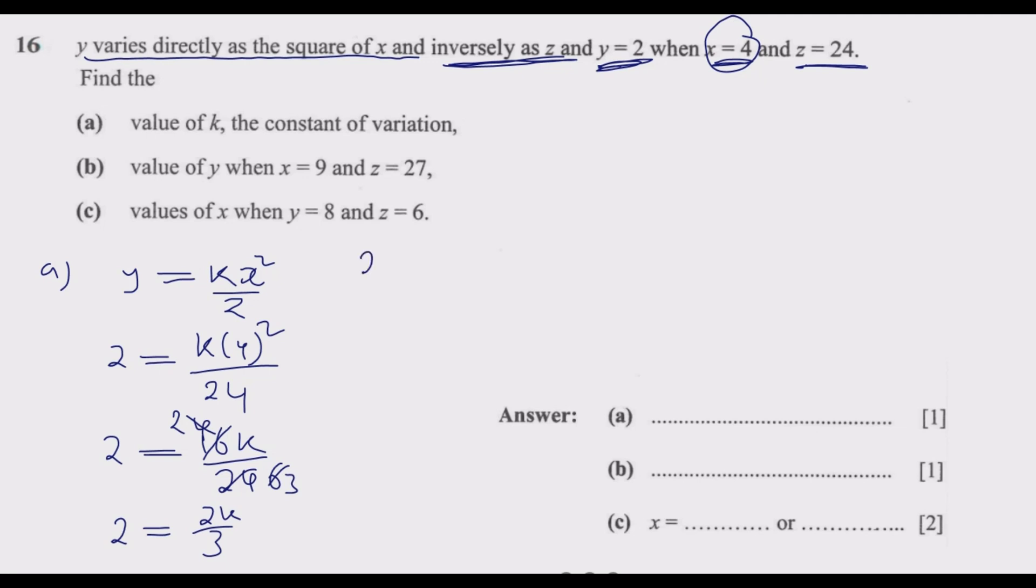We divide by 2 on both sides. So basically, we know that K equals 3. So the constant of variation is equal to 3. That's question A.